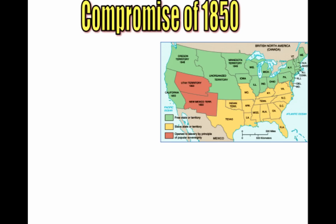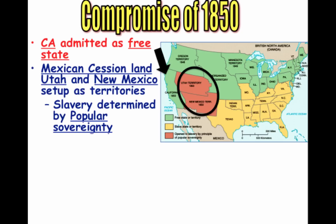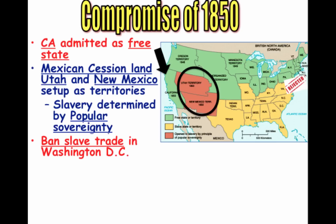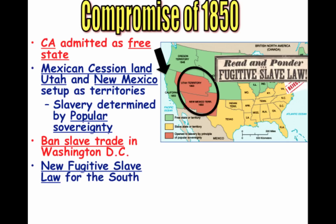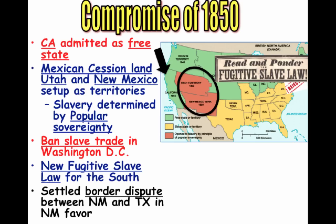That is the Compromise of 1850, which has a number of parts. First, California will be admitted as a free state. Two territories will be set up — Utah and New Mexico — and the issue of slavery will be left to popular sovereignty. The slave trade would be banned in Washington, D.C. There would be a tougher fugitive slave law for the South, as they felt runaway slaves were not being sent back by Northerners. And there's a border dispute between New Mexico and Texas, with Texas agreeing to give that land to New Mexico.